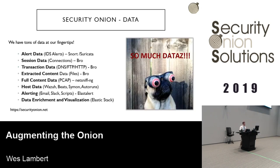We want to expand upon NSM — network security monitoring — and really go for full-scale enterprise security monitoring, getting all that telemetry and other data, and really being able to make an informed decision. We need to be able to respond quickly when we get that data and are trying to investigate. Security Onion already provides alert data like Suricata alerts, session data from Bro, connection data, transaction data, extracted content, full PCAP, and host telemetry — all neatly wrapped up with the Elastic Stack where you can visualize and aggregate all this different data.